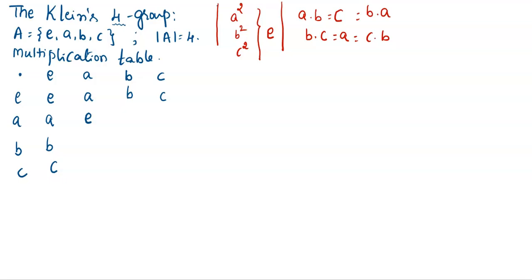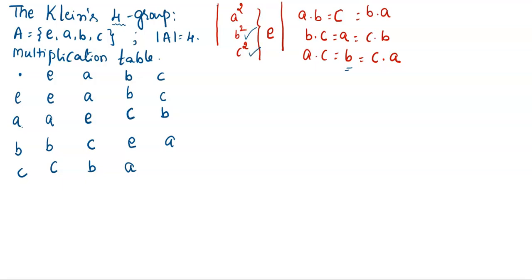Let me write down in the table. A dot B is C. A dot C: the element we are getting is B. Similarly, C dot A is also B. B dot A is C. B dot B is B squared, so we get the identity element E. B dot C is A. C dot A gives B. C dot B gives A. C dot C gives the identity element E.